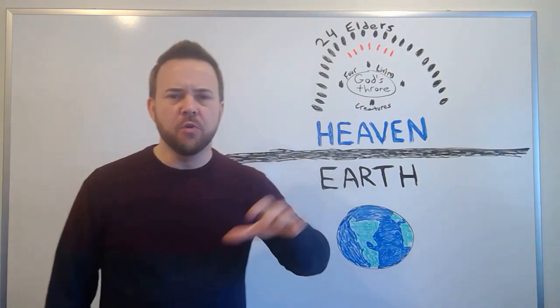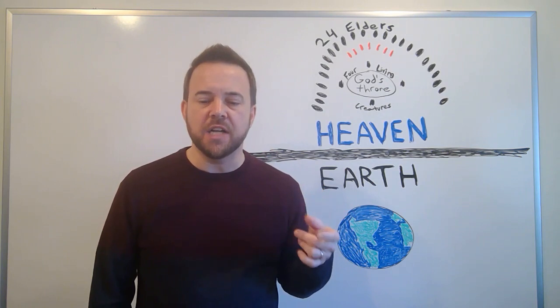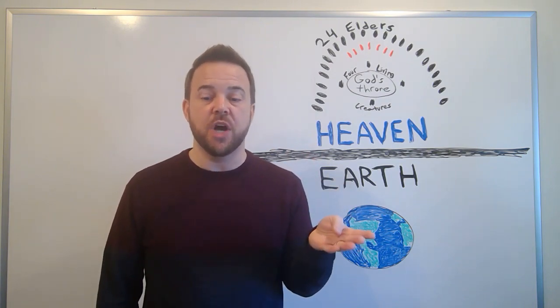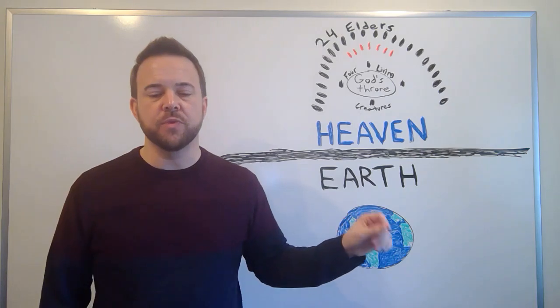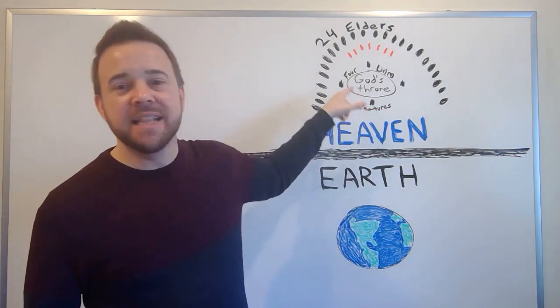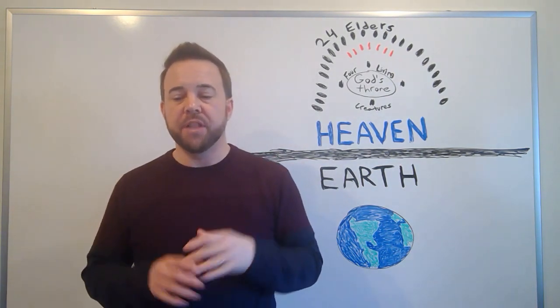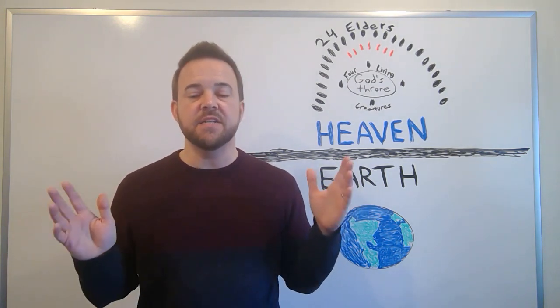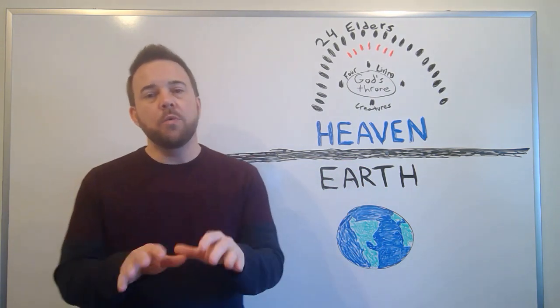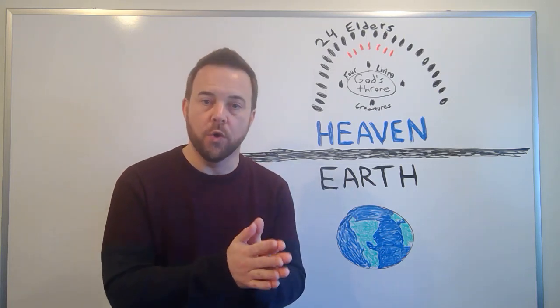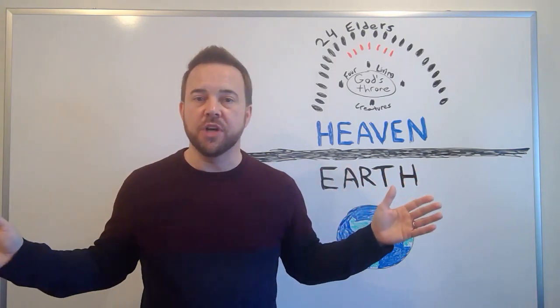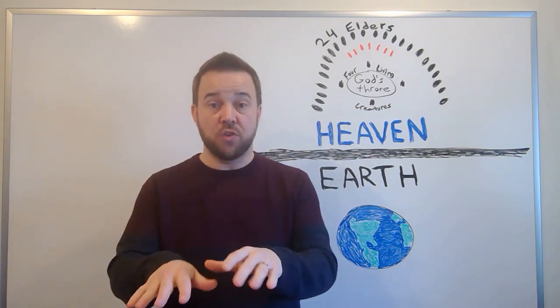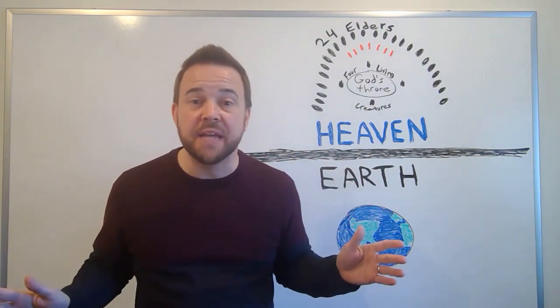Several centuries after Revelation was written, people identified the four gospel writers with these creatures. Matthew was the human, Mark was the lion, Luke was the ox, and John was the eagle. But that was long after Revelation was written, so we can't really read that into this and say that it's Matthew, Mark, Luke, and John surrounding the throne of God. But the point here is that they are ever watchful, unceasing servants of God. What we see in this chapter is power and order. God is in charge of it all. So, everything that happens after this, all of the disasters and the hardship and suffering that is described later, it is not random chaos.